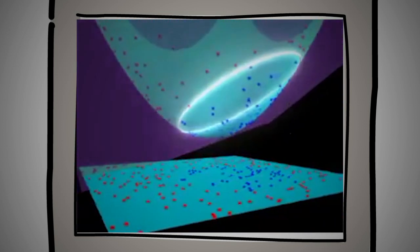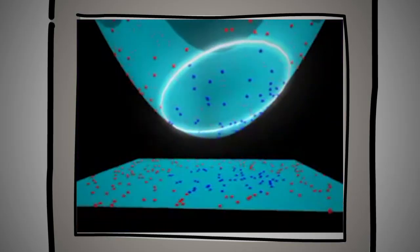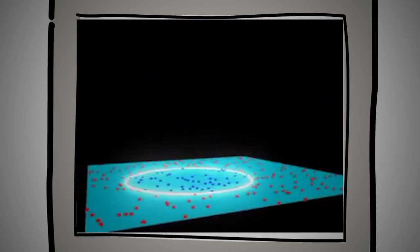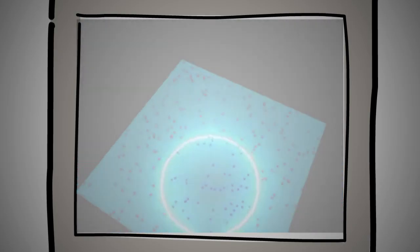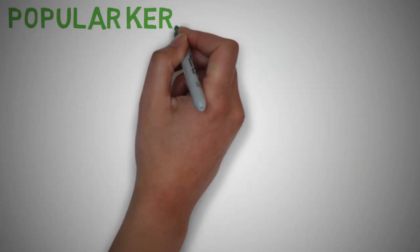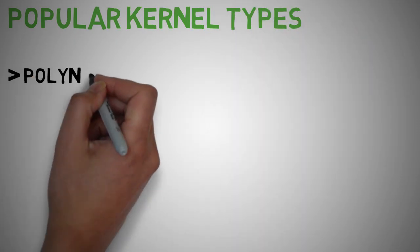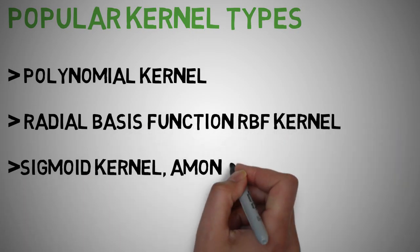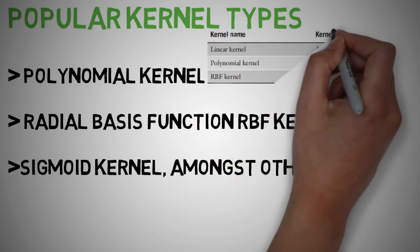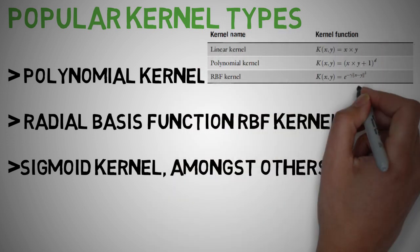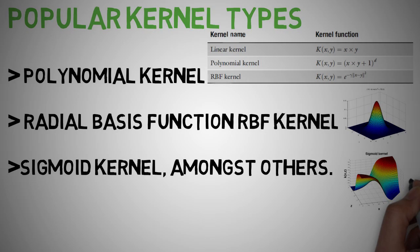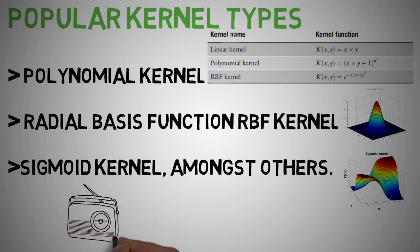Using a kernel function, we can apply the dot product between two vectors so that every point is mapped into a higher dimensional space via some transformation. So essentially, we use it to transform a non-linear space into a linear space. If we look at some popular kernel types, there are polynomial kernel, radial basis function RBF or RBF kernel, sigmoid kernel, amongst others. Unfortunately, choosing the correct kernel is a non-trivial task and may depend on specific tasks at hand. No matter which kernel you choose, you need to tune the kernel parameters to get good performance from your classifier. A popular parameter tuning technique includes k-fold cross-validation.